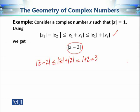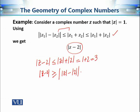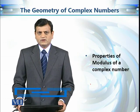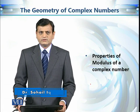Similarly, using the lower bound part of the inequality: |z − 2| ≥ ||z| − |2|| = |1 − 2| = 1. So the modulus of z − 2 is greater than or equal to 1. Therefore, 1 ≤ |z − 2| ≤ 3, where 1 is the lower bound and 3 is the upper bound. We have now seen some properties of the modulus, especially upper and lower bounds for the modulus of the sum of two complex numbers.